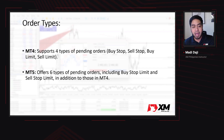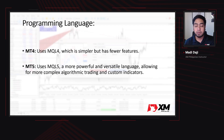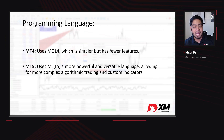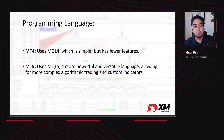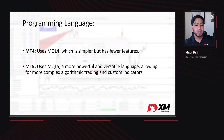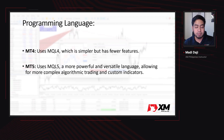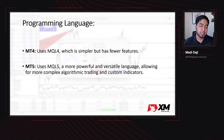For its programming language, MT4 uses MQL4, which is simpler but has fewer features. While MT5 uses MQL5, a more powerful and versatile language, allowing for more complex algorithmic trading and custom indicators.